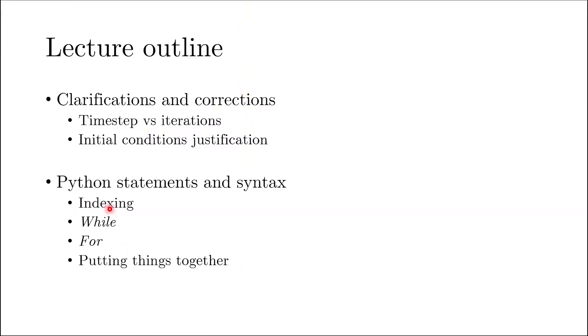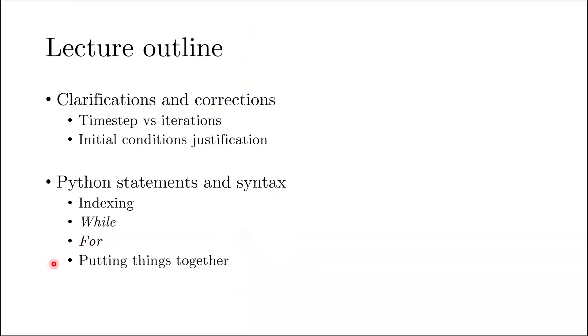With this lecture I want to give you all the pieces you might need to assemble a working code. I will talk about indexing in Python, the while statement, and the for loop — these form a backbone of your code. As a reminder, this is for a one-dimensional heat conduction problem, and we have already covered the discretized equations and theoretical aspects in past lectures. Stick until the end and let me know in the comments if you have questions.